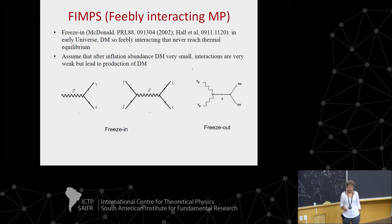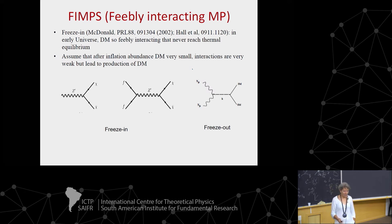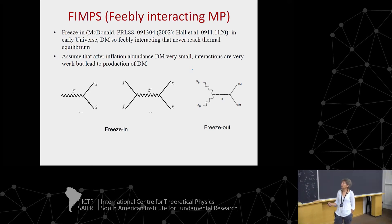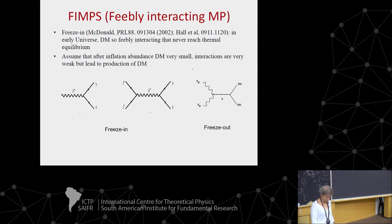The main point is that because the coupling is very small, the feebly interacting particle never reaches thermal equilibrium. You assume its density is very small, and then interactions — although very weak — can lead to production of dark matter, either through decay or through interaction of standard model particles in a final state. This is kind of the reverse process that contributes mainly to freeze-out.